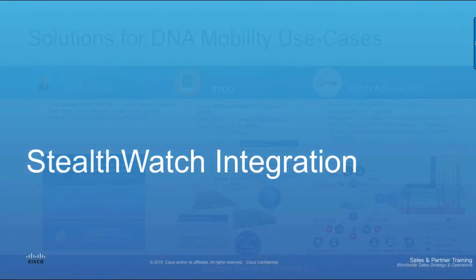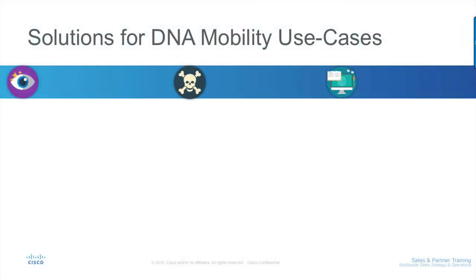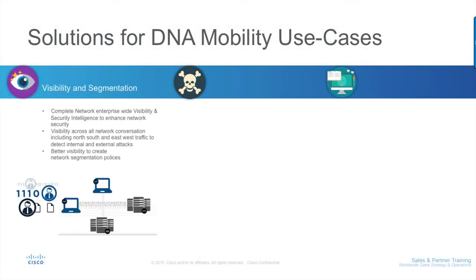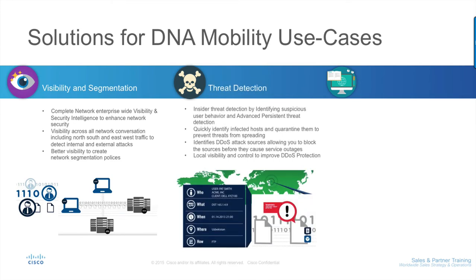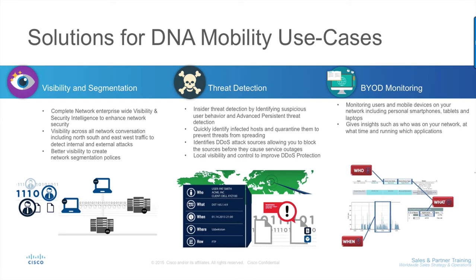Cisco's integration with StealthWatch enables enterprise-wide visibility across all network conversations, including north-south and east-west traffic, to determine internal and external attacks. Better visibility helps create better network segmentation policies. It helps quickly identify infected hosts by giving insights such as who was on your network at what time, running which applications, and quarantines them to prevent threats from spreading. Monitoring users and mobile devices on your network, including personal smartphones, tablets, and laptops, gives unprecedented control on BYOD devices and restricts access to critical resources. All these features are enabled by the NetFlow protocol, synchronizing traffic stats to LANCOP servers where it is processed in the form of a flow table per controller.